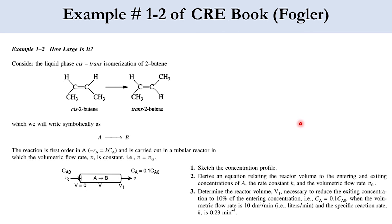The last example of this chapter considers the liquid-phase cis-trans isomerization of 2-butene, written symbolically as A → B. The reaction is carried out in a tubular reactor (plug flow reactor) and is first order with respect to A, the limiting reactant. We write the rate equation as −rA = k·CA, where k is the specific reaction rate constant.